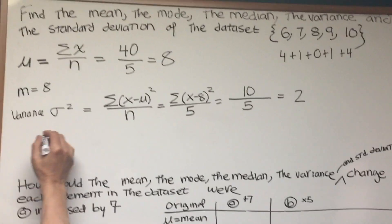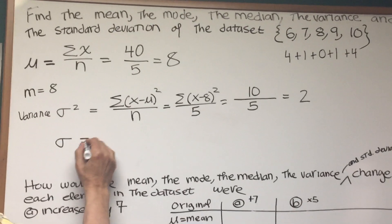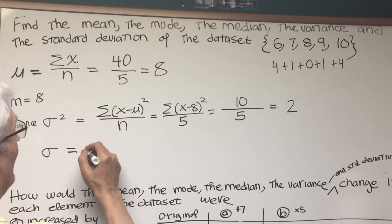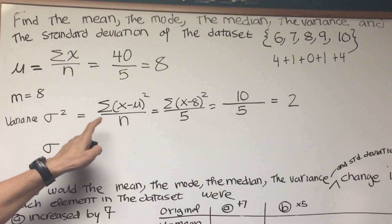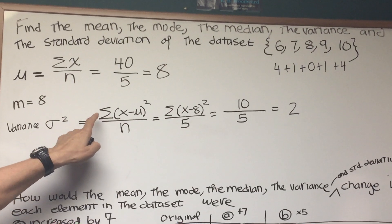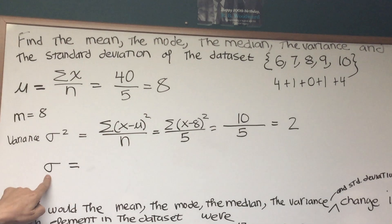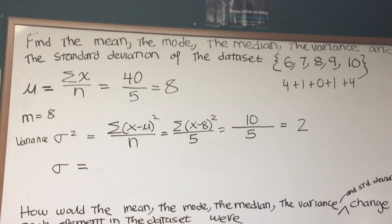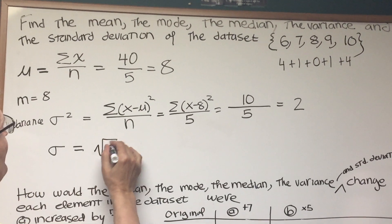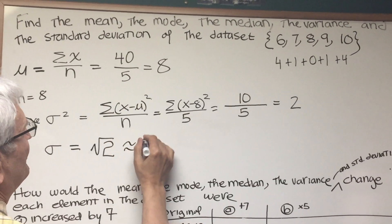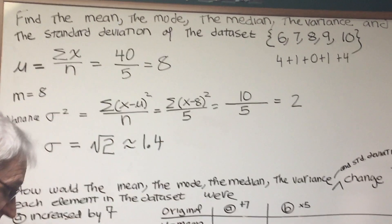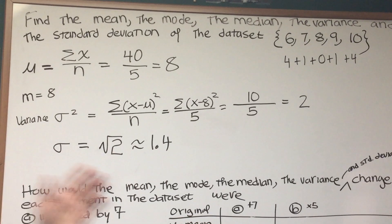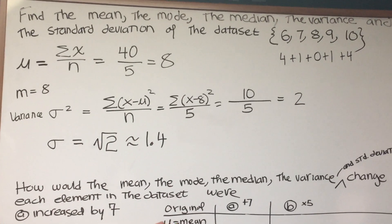Now to find the standard deviation, all we have to do is take the square root of that. Sigma is the variable for standard deviation. So all we have to do is say it's the square root of 2 or approximately 1.4. And that's how to calculate the variance and the standard deviation. We need the variance to find the standard deviation, just a matter of taking the square root.